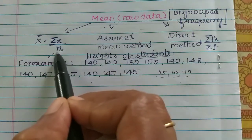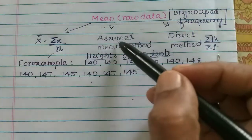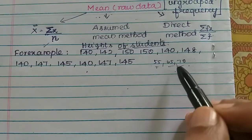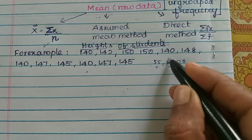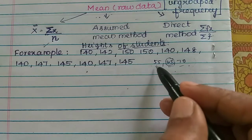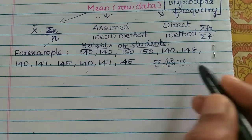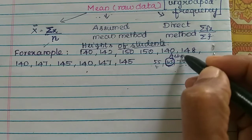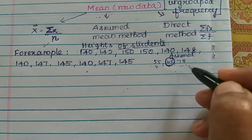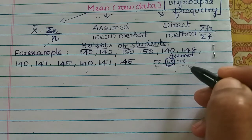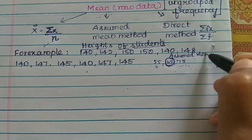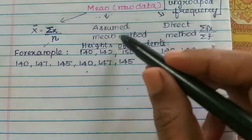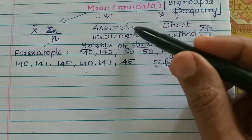For the general method with raw data, we just apply sigma x divided by n. For the assumed mean method, you choose a middle number from your data — for example, 65 — and that becomes your assumed mean A. You subtract each observation from A to find deviations.